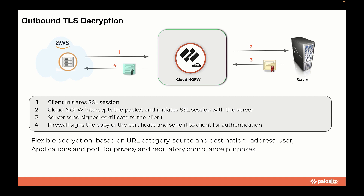Cloud NGFW uses a certificate to establish itself as a trusted third party. Looking at the flow here, when cloud workloads initiate an outbound connection to an external server, the firewall will intercept this request. The NGFW behaves as the server, and will then forward the client's certificate request to the server. To the server, the firewall is the client.